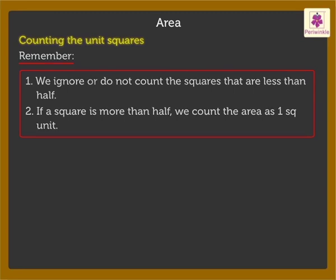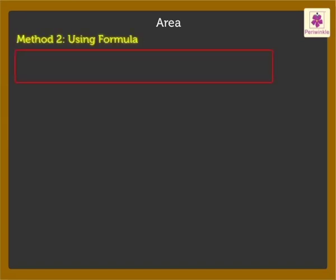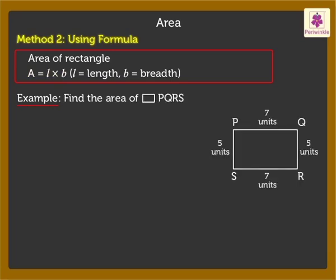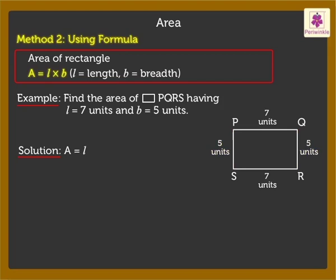Now let's see how to find the area using formulas. The area of a rectangle can be found using the formula A equals L into B, where A is the area, L is the length, and B is the breadth of the rectangle. Let's use this formula to find the area of rectangle PQRS having length 7 units and breadth 5 units. Using the formula, area equals length into breadth, we get the area as 35 square units.